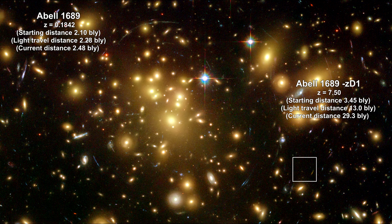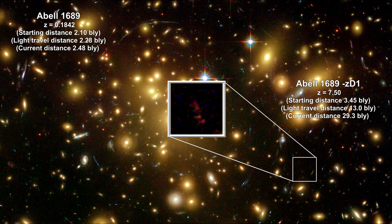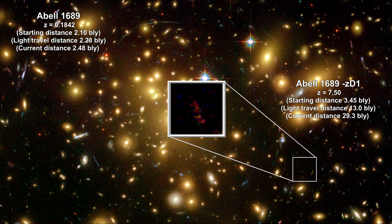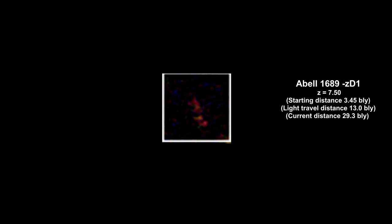Here's a gravitationally lensed galaxy A1689-ZD1. It is one of the most distant spectroscopically confirmed sources with a redshift of 7.5. We are seeing what ZD1 looked like when the universe was only 700 million years old. It is the earliest known galaxy where dust was detected in its interstellar medium. And surprisingly, it has the same ratio of dust to total mass as very mature galaxies such as our own Milky Way.